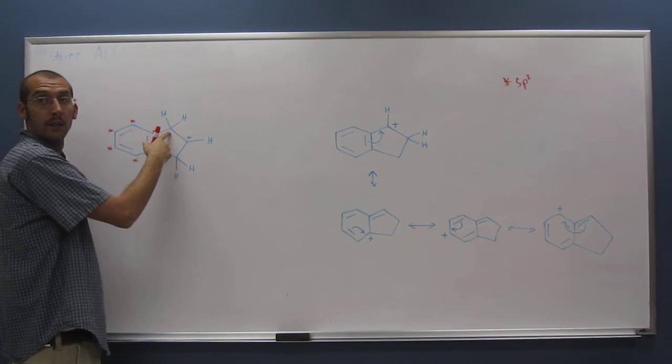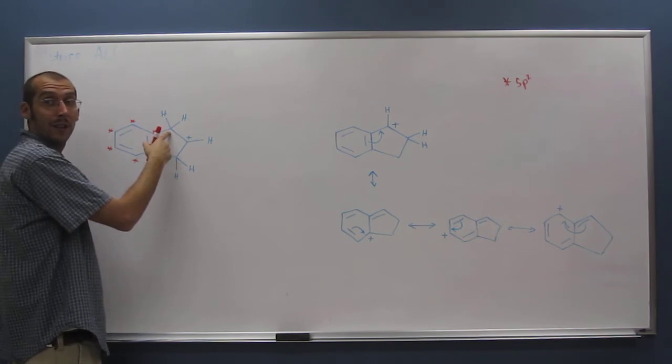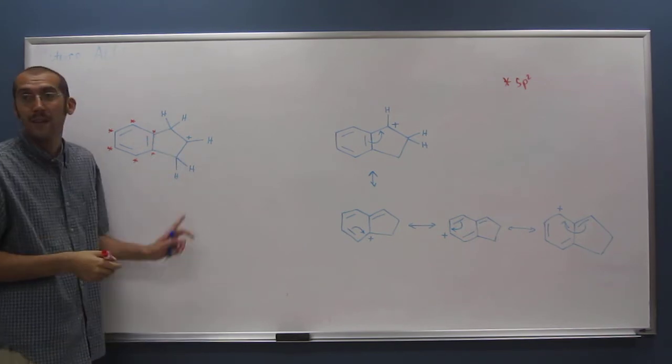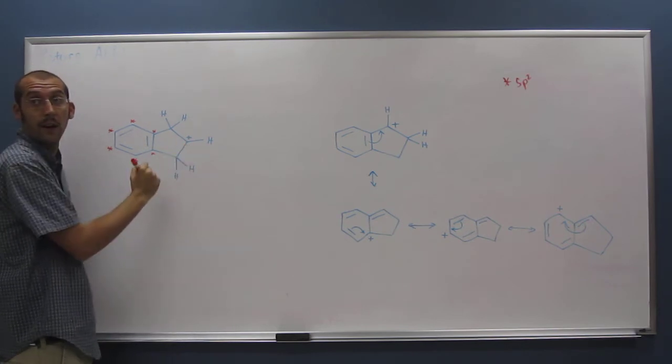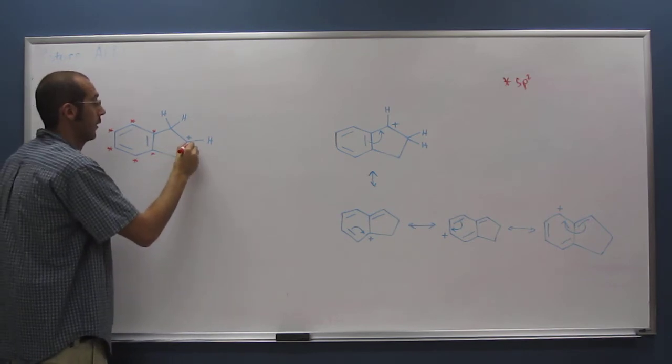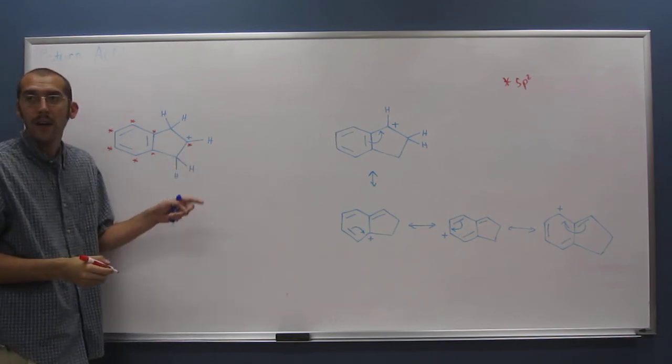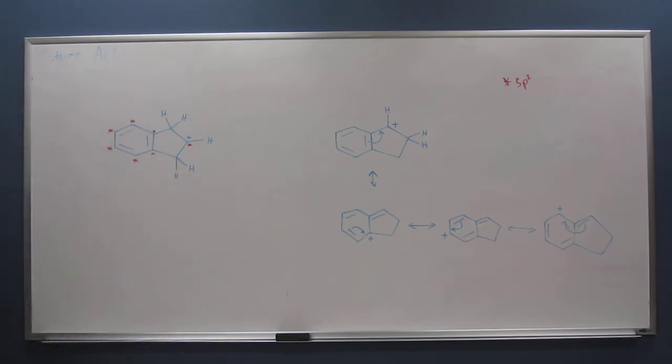Is this one? No, it's not. It's tetrahedral, or we call it sp3. This one is or not? Yes, definitely. That's where the carbocation is. All carbocations are sp2 hybridized.